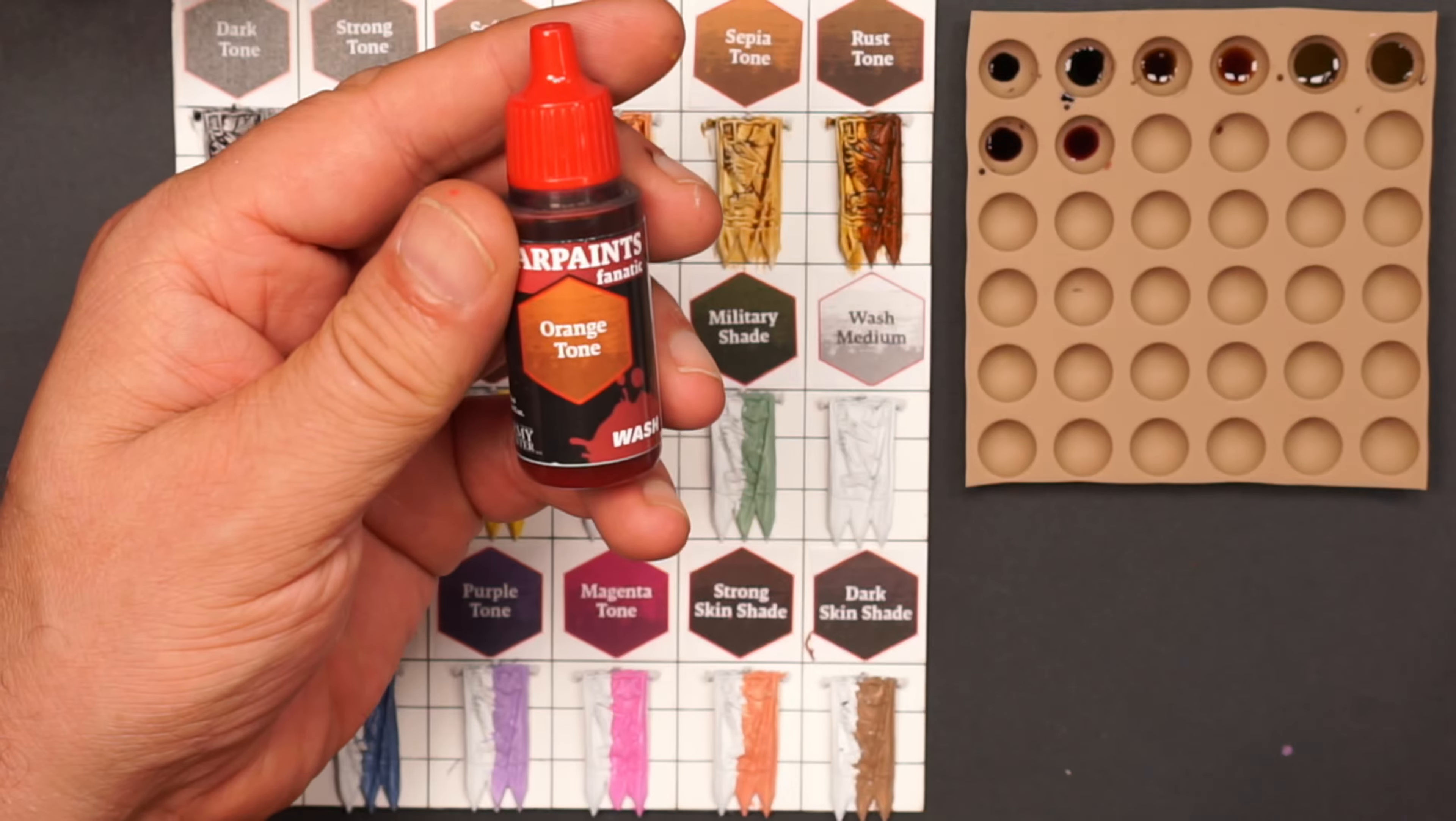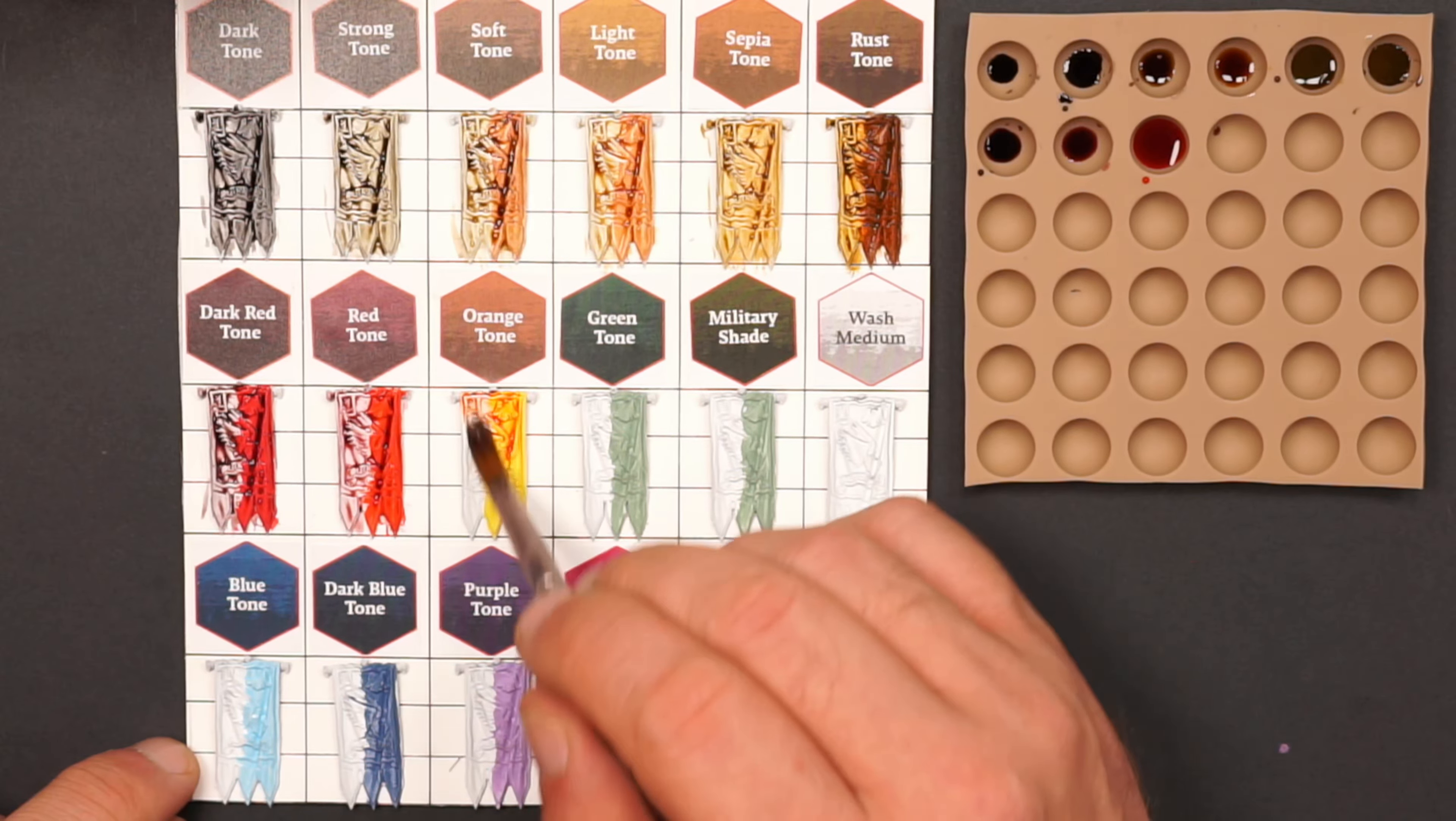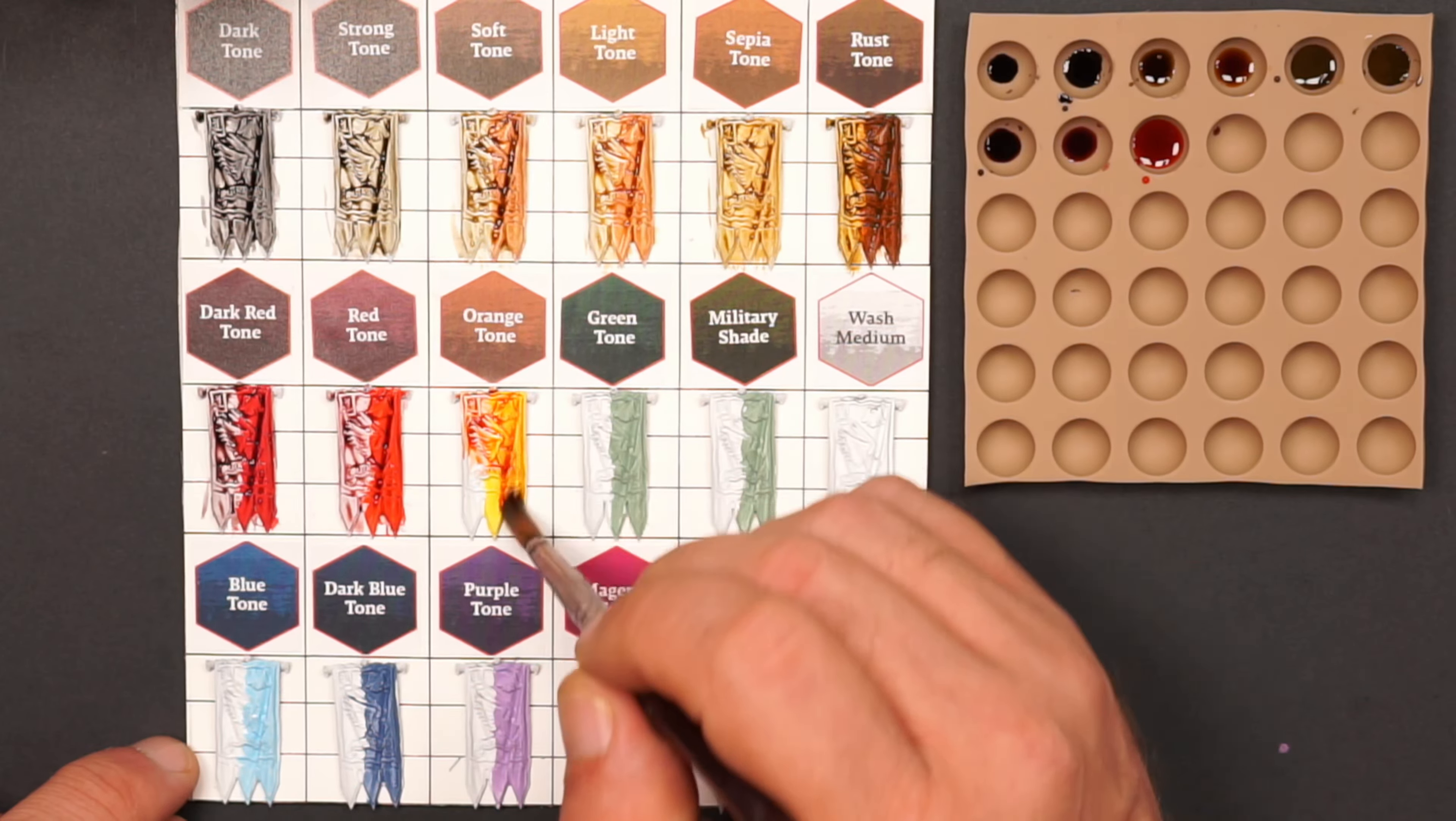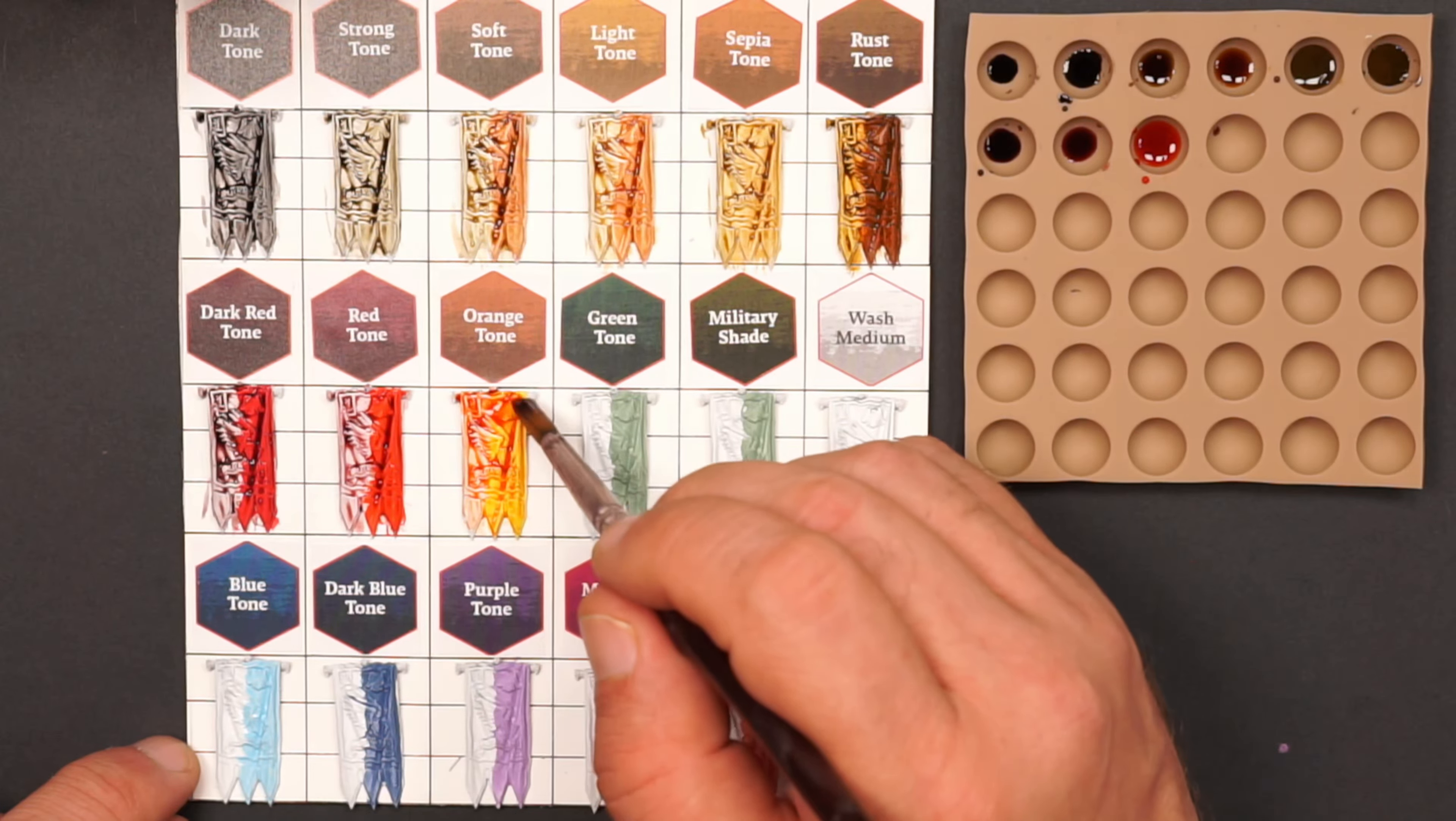Orange tone is one of the new colors, and this is a very interesting color because it is new. That was why I chose to put it over a yellow color, just to see how it worked out, and I think it looks great. I will definitely use this in the future on a miniature.